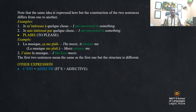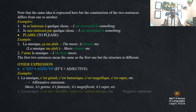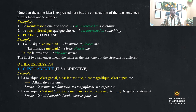Another expression uses 'c'est' plus an adjective. Positively: 'la musique, c'est génial / c'est fantastique / c'est magnifique / c'est super.' Negatively: 'la musique, c'est nul / horrible / mauvais / catastrophique.' These express strong positive or negative opinions about something.